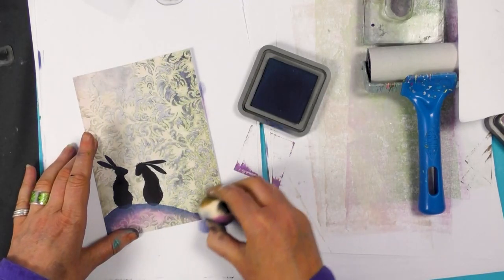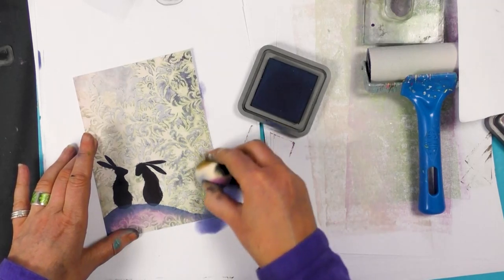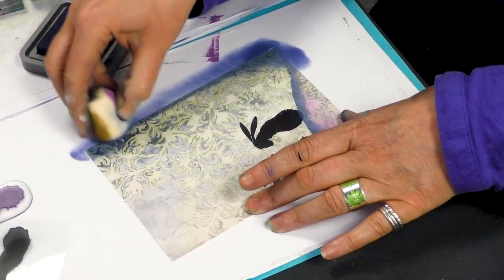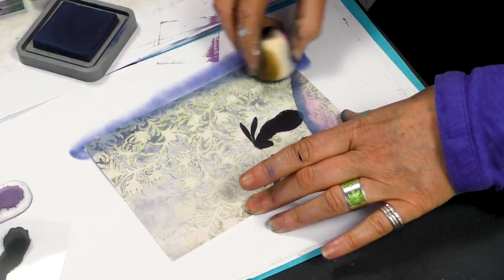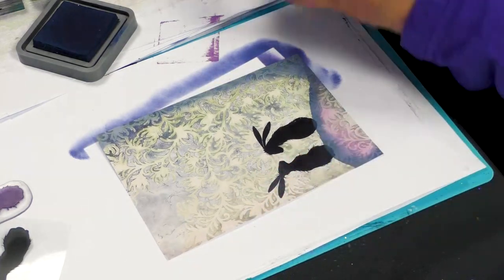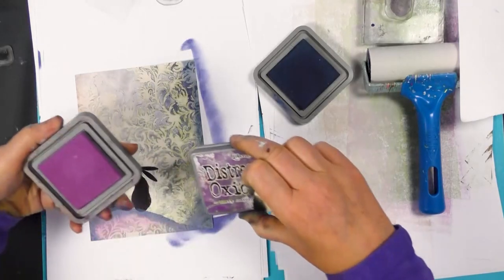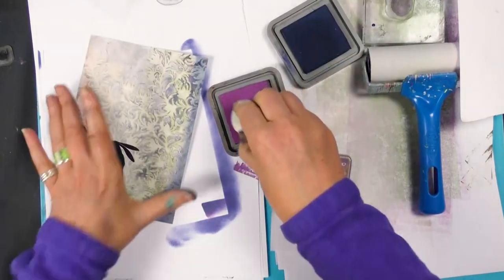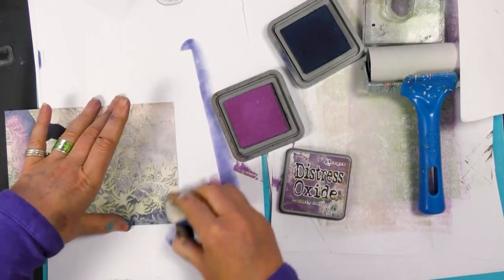So I'm just going to use that same color just to go around the edge and also this one, dusty concord, this one, so I'm going to use a little bit of this as well.